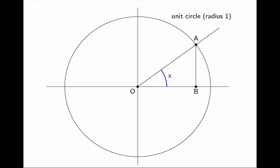Since the radius of the circle is 1, the coordinates of A are going to be sin(x) and cos(x), or specifically, this vertical distance from A to B is sin(x). And this horizontal distance from O to B is cos(x). And this is true because the radius of the circle is 1.